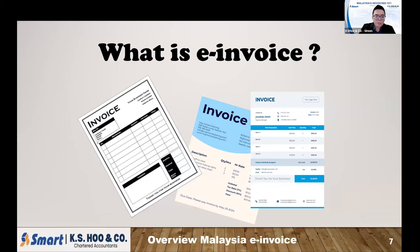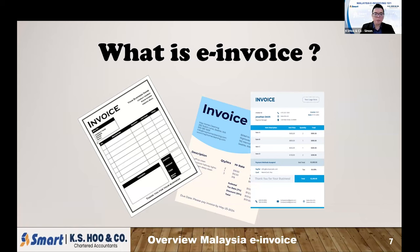Currently, every company issues invoices to customers — you might use software, handwriting, or a POS system. When you receive invoices from your supplier, they also use software, handwriting, or a POS system. Normally, businesses print out the invoice, send a PDF, scan a copy, or send a photo to the client as a document to record the transaction.